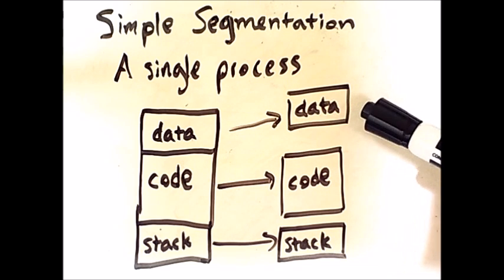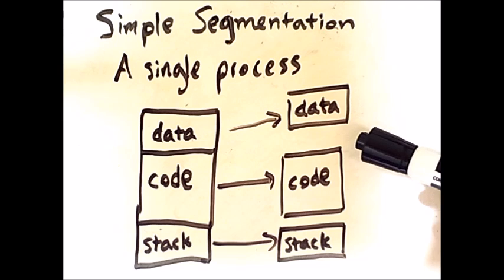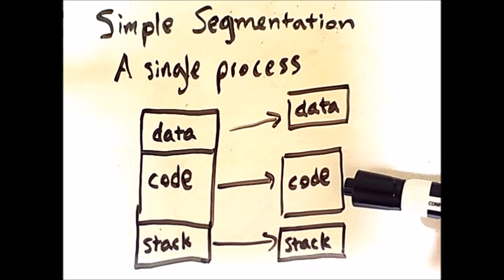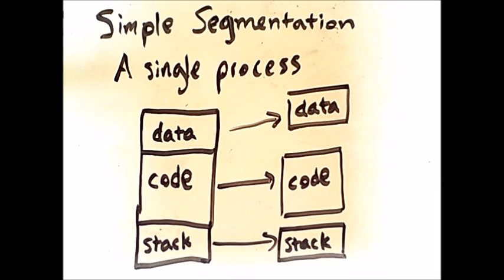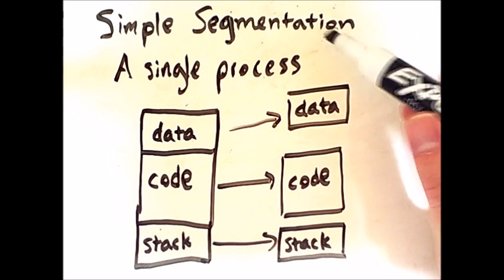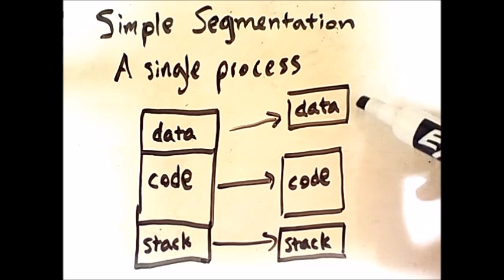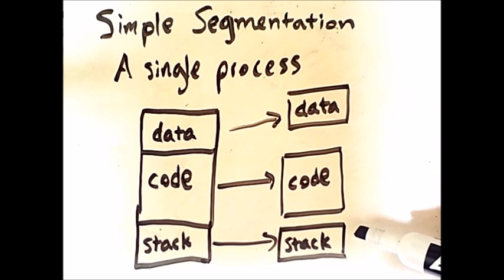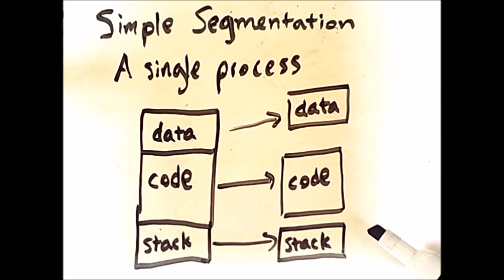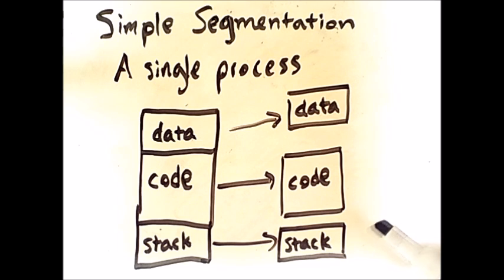Having more smaller chunks of data to organize will usually make it easier to utilize memory efficiently than having fewer large chunks, as we see here. Because the manner in which a process is segmented directly corresponds to separate components of the program or process, this approach to memory management is said to be visible to the programmer. This is in contrast to paging, which is entirely handled by the operating system and happens behind the scenes.